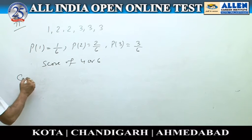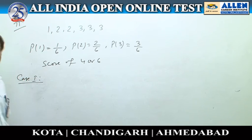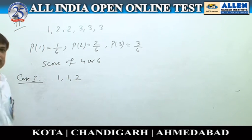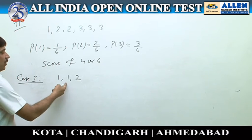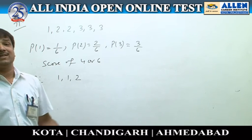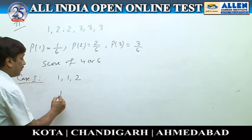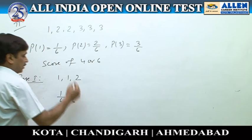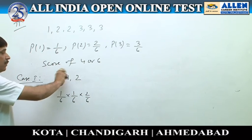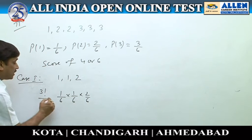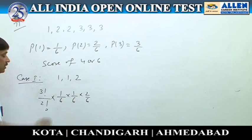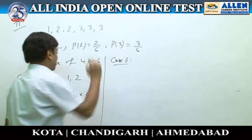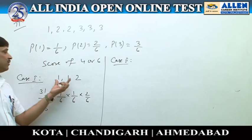Case 1: Total score of 4. The possible combination is (1, 1, 2). Since the die throws are independent events, the probability is (1/6) × (1/6) × (2/6). These 3 outcomes can be mutually arranged in 3!/2! ways since two values are the same. So the probability for this case is (1/6)(1/6)(2/6) × 3!/2!.